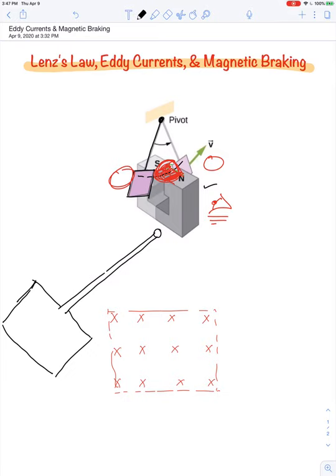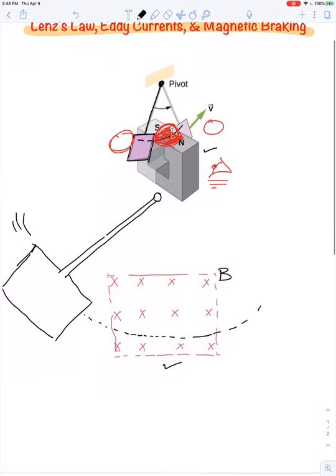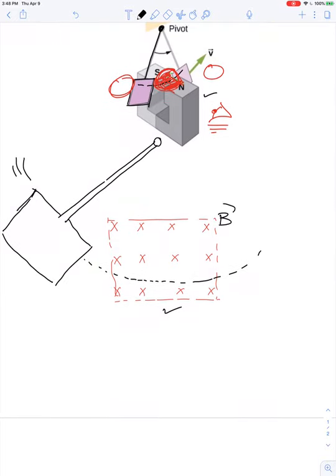So it sits here outside of that magnetic field but it was dropped from rest and it starts to swing and eventually it's going to follow this curved path and at some moment it's going to sit inside of this uniform magnetic field. For now, none of these field lines pass through the cross-sectional area of this aluminum plate and so there's no flux.